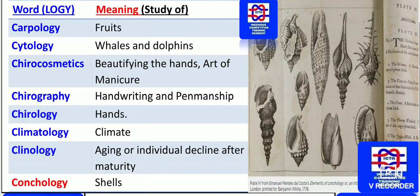The study of whales and dolphins is known as cetology. Beautifying the hands — the art of manicure — is known as chirocosmetics. The study of handwriting and penmanship is known as chirography. The study of hands is known as chirology.